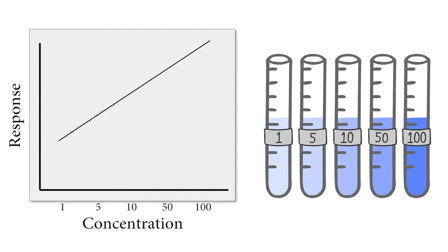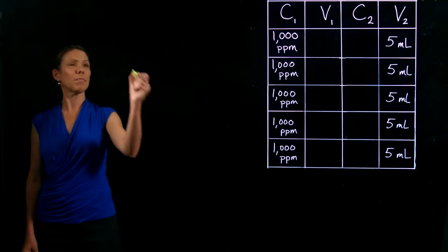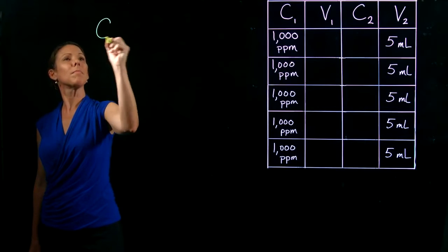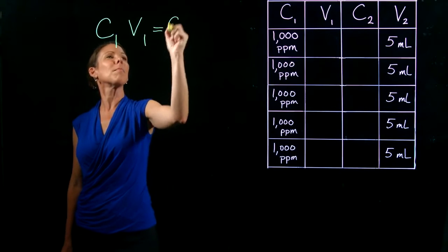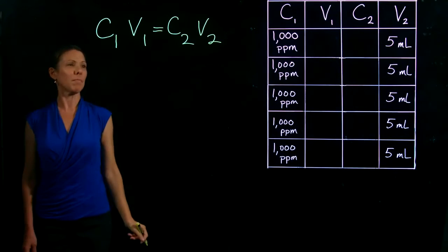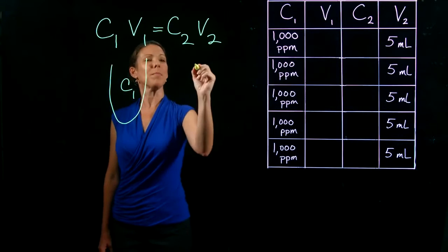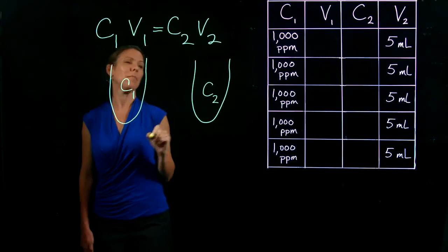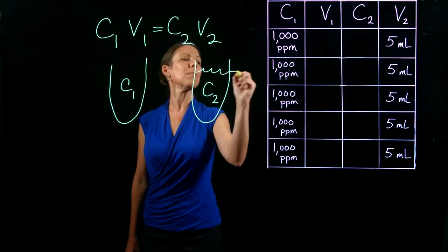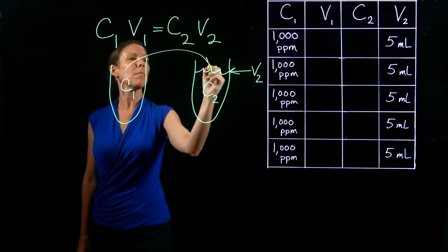To make calibration standards, we start with a stock solution of the analyte and make dilutions using this equation: C1 times V1 equals C2 times V2. C1 is the concentration of the stock solution. C2 is the concentration of the standard we are making. V2 is the final volume of the standard we want to make, and V1 is the volume of the stock solution we will use to make that standard.